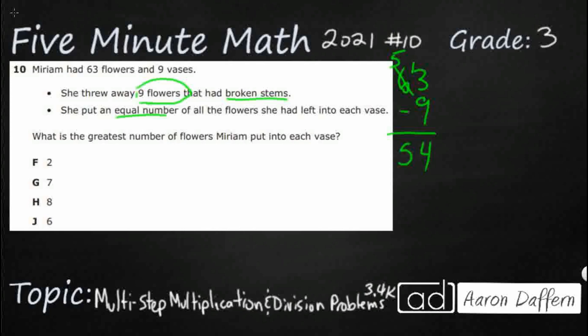So what we did here is we just took our total to begin with. I'm going to write a big number sentence for us. We're going to do 63 minus 9, and then we're going to put an equal number of all flowers left into each vase. We've got 9 vases, so then we're going to divide by 9.